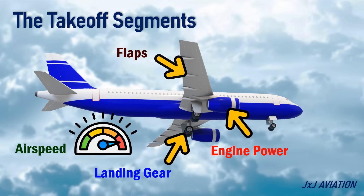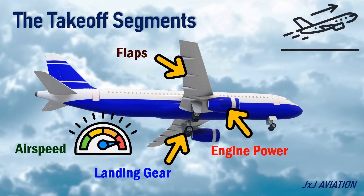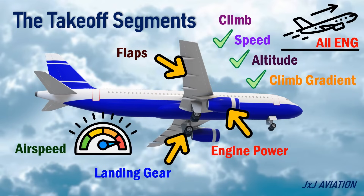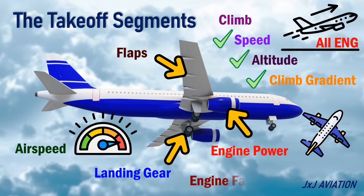During a normal aircraft takeoff with all engines operating, although the takeoff segments are applicable, the aircraft will easily climb and meet the speed, altitude, and climb gradient requirements. So to get a clear picture of the takeoff segments, let's consider a two-engine aircraft which has an engine failure at V1.